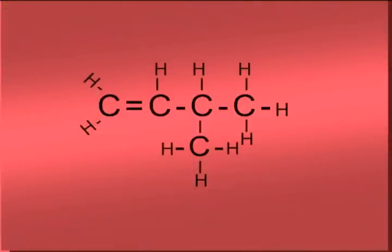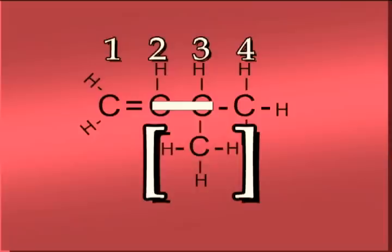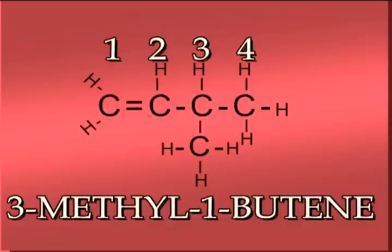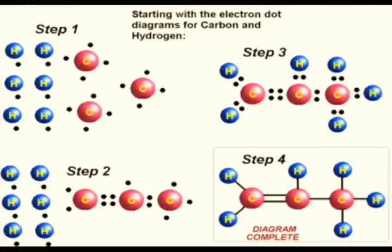Finally, we have the isomer where the methyl group is actually two carbons away from the double bond. Remember, the bond modification takes priority when naming. So this compound is called 3-methyl-1-butene. The condensed formula for this compound would be CH2, CH, CH with a methyl group CH3 in parentheses, and the terminal carbon CH3.